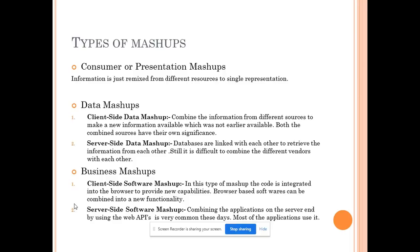The most widely used method currently is the server-side software mashup. In this case, certain services are provided from a single place, but on the back end that server uses certain APIs to provide you with that functionality. We will also discuss those APIs - what are the different types of APIs and from where you can get them. The information available is related to public APIs, not private APIs.